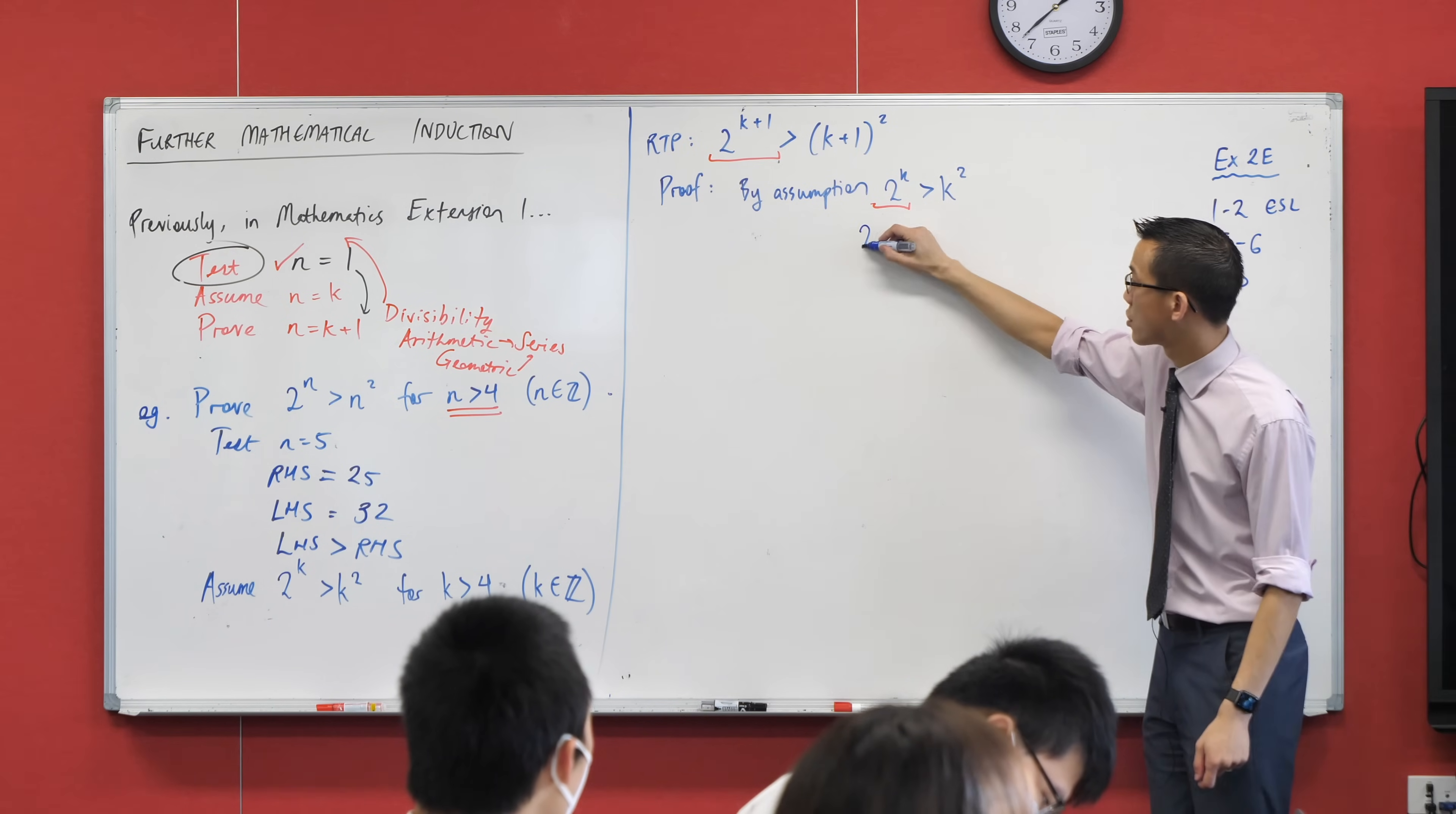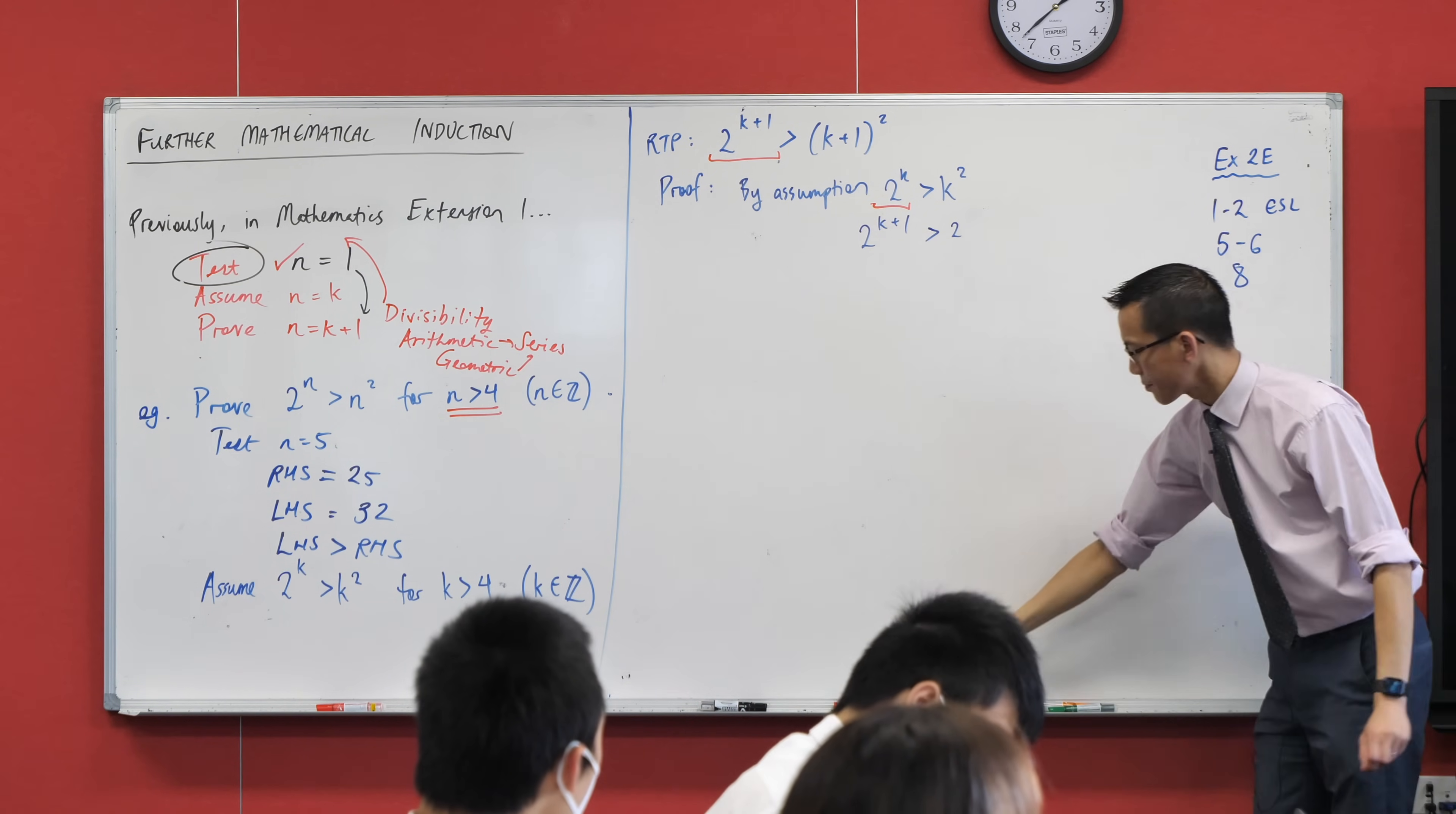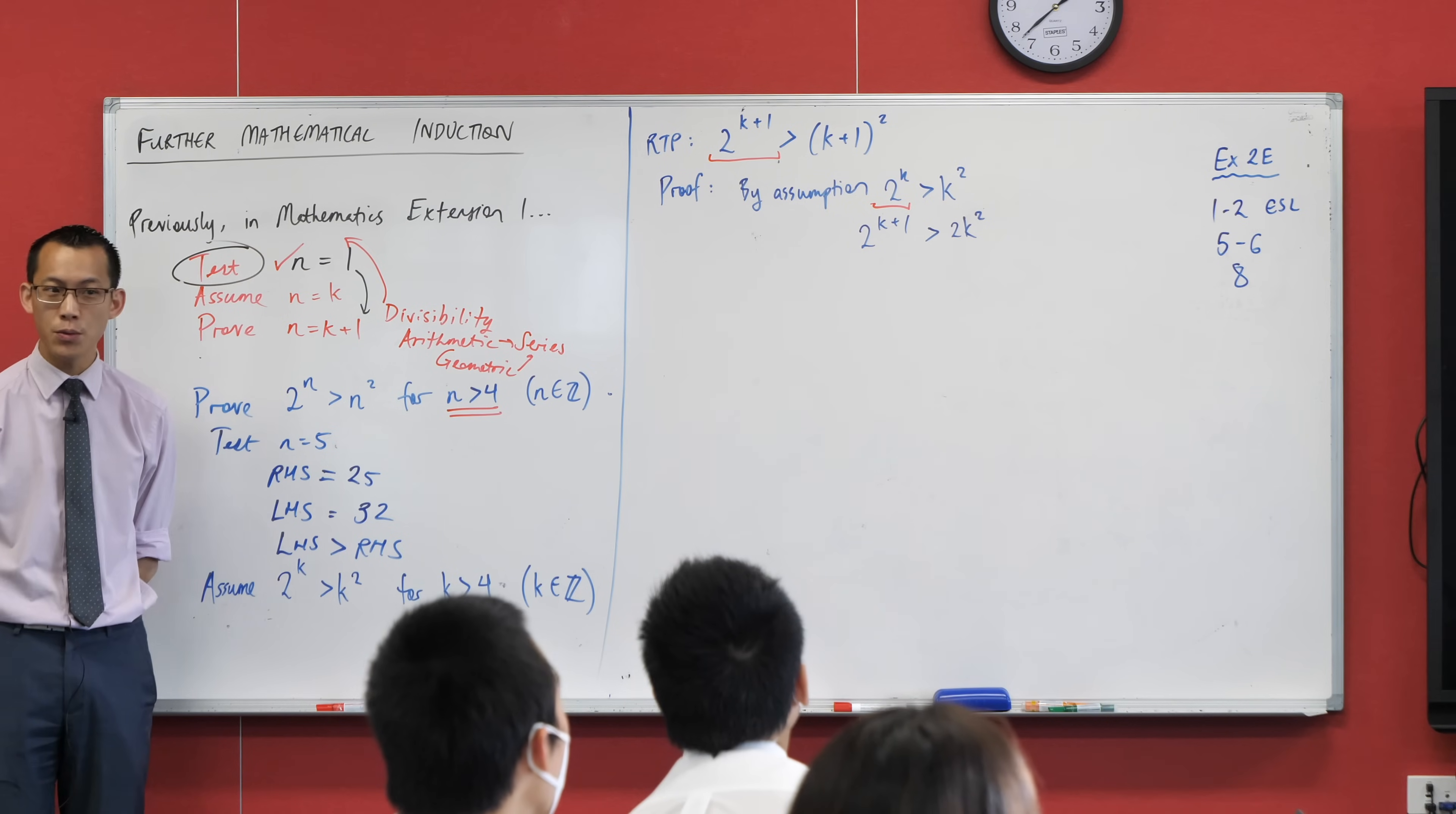If I multiply the left-hand side by two, bam, I'm there. So, of course, positive integer, or positive real number, rather, I can just multiply the right-hand side by two and everything is fine. So, I've got this. Oops, what am I doing? Wrong, wrong right-hand side that I'm multiplying by. It's just k squared. Okay, wonderful.